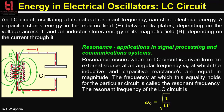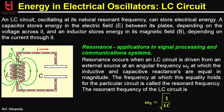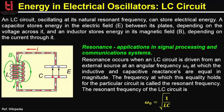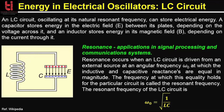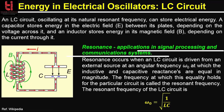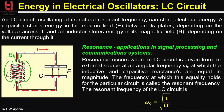So now we will talk about an important phenomenon called resonance. Resonance occurs when an LC circuit is driven from an external source at an angular frequency ω₀ at which the inductive and capacitive reactances are equal in magnitude — that means ωL = 1/(ωC). The frequency at which this equality holds for a particular circuit is called the resonant frequency. The resonance effect of the LC circuit has many important applications in signal processing and communication systems, for instance tuning radio transmitters and receivers. When you tune a radio to a particular station, the LC circuits are set at resonance for that particular carrier frequency.